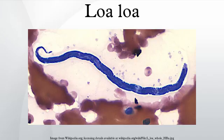Larvae mature into adults, who produce microfilariae that have been found in spinal fluid, urine, peripheral blood, and lungs.